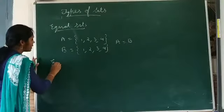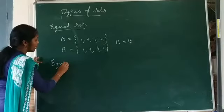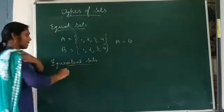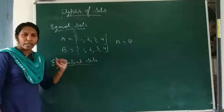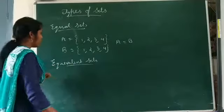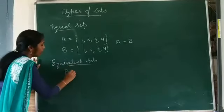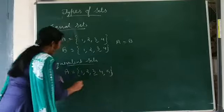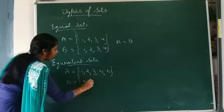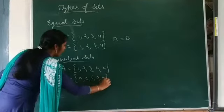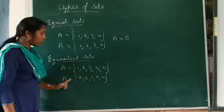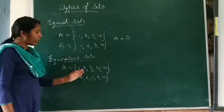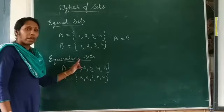Another one is equivalent sets. If two sets have the same cardinal number, those two sets are known as equivalent sets. For example, if n(A) is equal to 5 and n(B) is also equal to 5, both sets have the same cardinal number. Therefore, these two sets are known as equivalent sets.